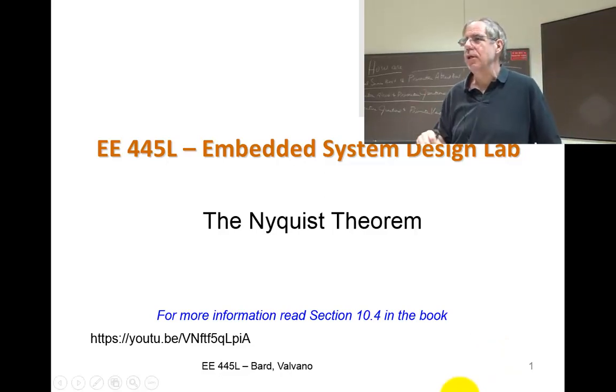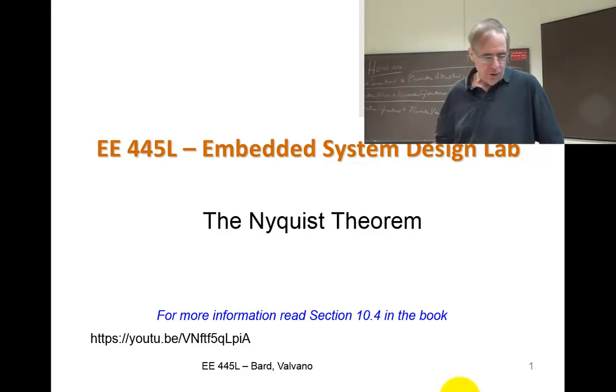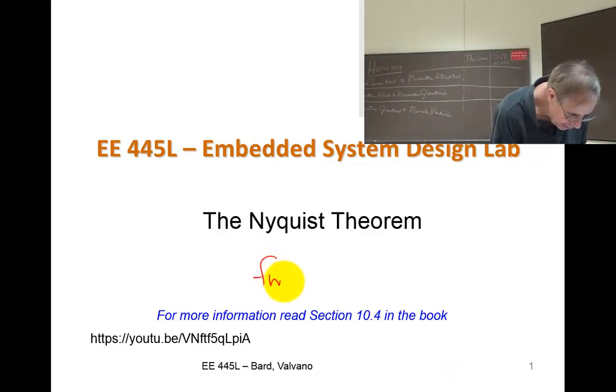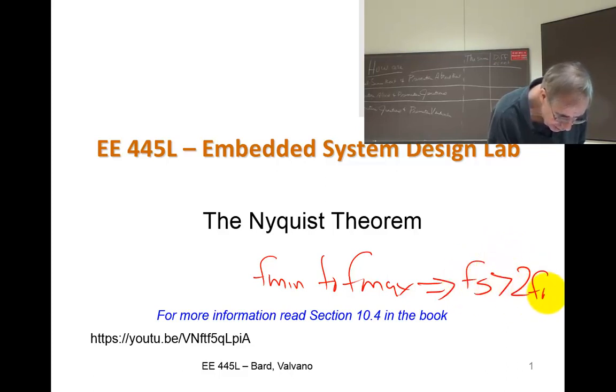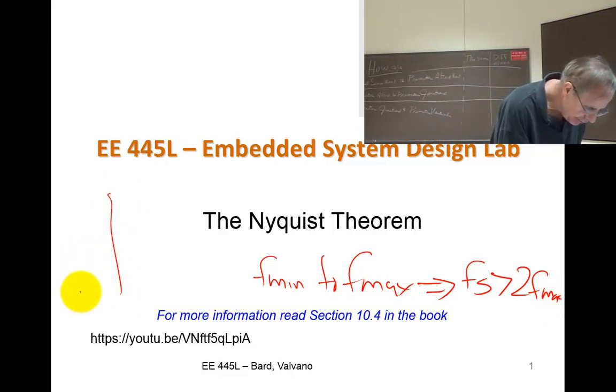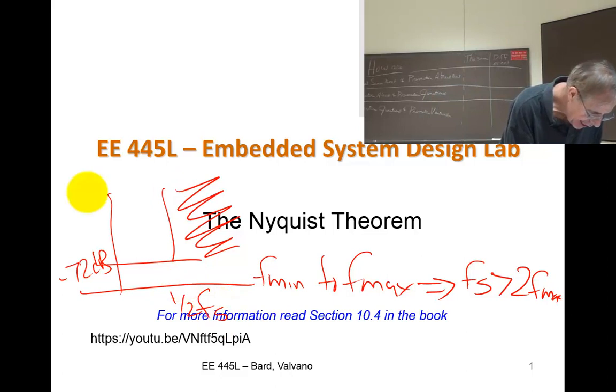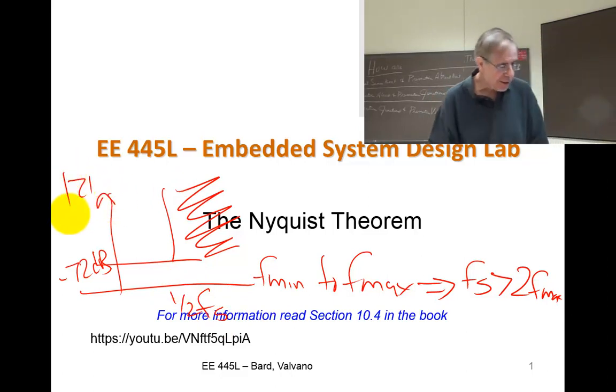All right, in this next lecture, we're going to take a look back at the Nyquist Theorem. I've mentioned to you over and over again, if I'm interested in f minimum to f maximum, this tells me I have to sample strictly greater than twice f maximum. That's the Nyquist Theorem. And the converse of that is any signal that exists as an amplitude greater than the resolution and above one-half fs is going to alias.